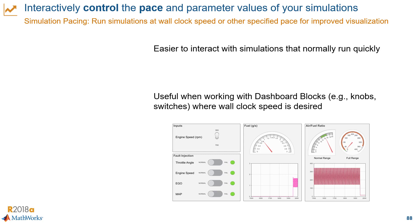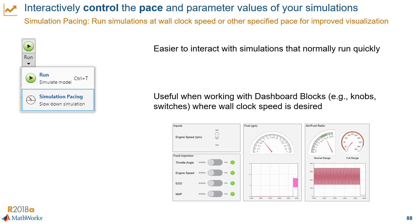Sometimes Simulink runs too fast, so it can be hard to change inputs or visualize dashboards in a way that makes sense. That's why we're giving you control over the simulation pace. All you have to do is click the Run dropdown in the toolbar and select Simulation Pacing.